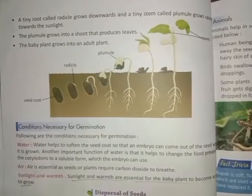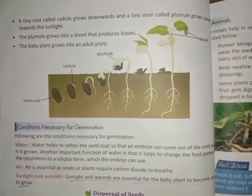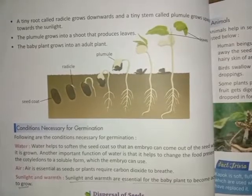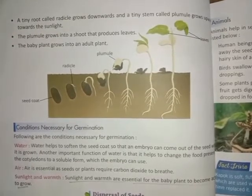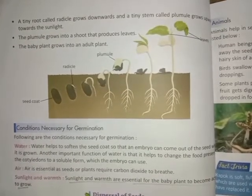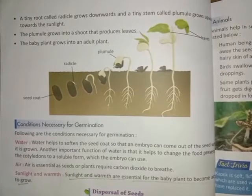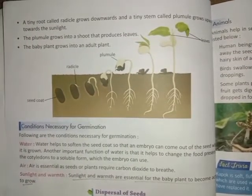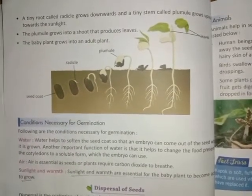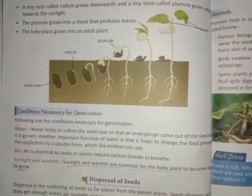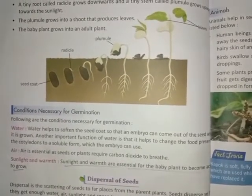Conditions necessary for germination. First is water — water is the most essential thing for plant growth. It helps to soften the seed coat so that the embryo can come out of the seed. Another important function of water is to change the food present in the cotyledon to a soluble form which the embryo can use. Air is essential as seeds and plants require oxygen to breathe. Sunlight and warmth are essential for the embryo — the baby plant — to become active and grow.